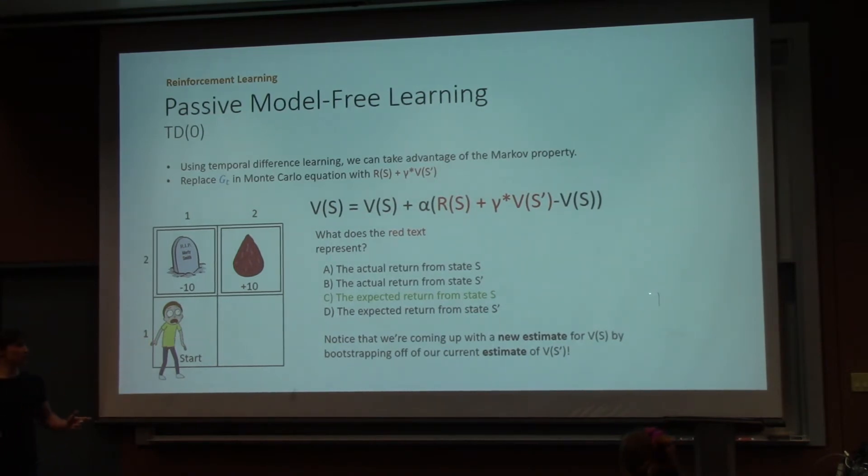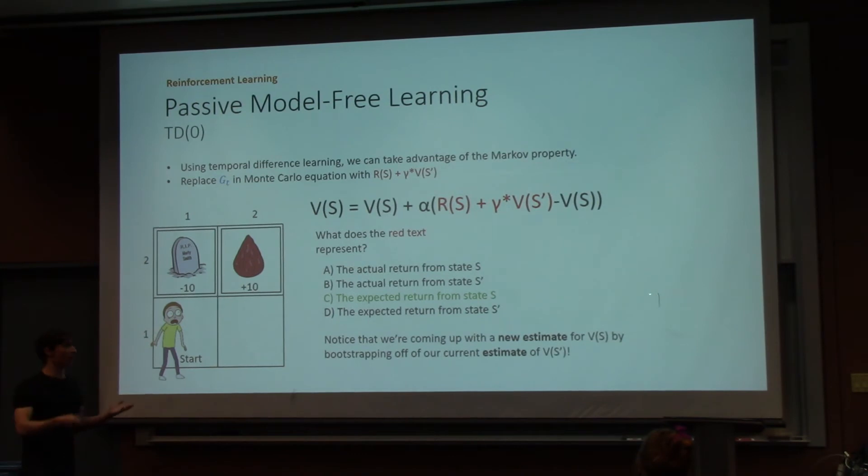So what's changed here? Before, we had the actual return from state S. Now, it's the expected return from state S. Where instead of using the actual return, we're taking the actual reward that we got from state S, and then we're adding some discounted value of our previous estimate.